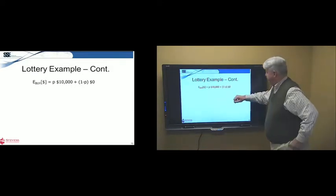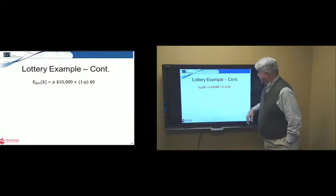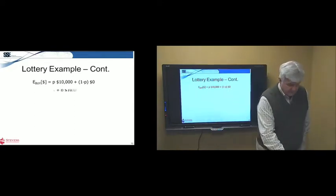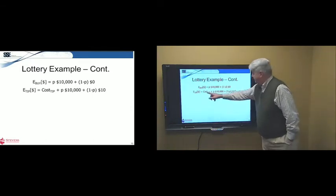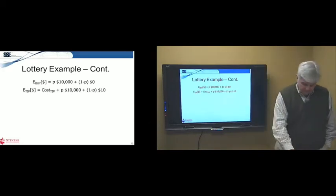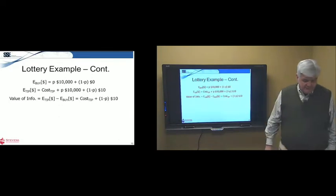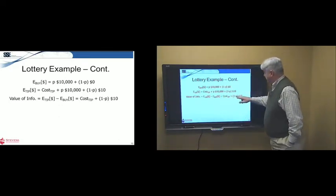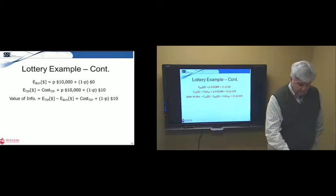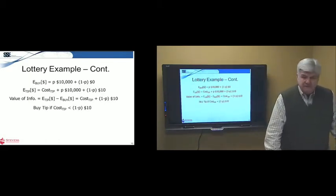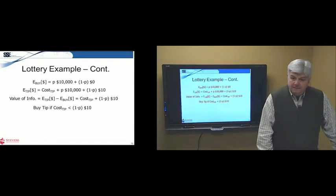So, if we buy a lottery ticket, again, the 10,000 crept in here again. We've got our probabilities, expected value. If we buy the tip, we have the cost of the tip plus the same. So we're actually having to pay for the tip here. But don't forget, if we buy the tip and it says the ticket's not going to win, we don't buy the ticket. So, the value of the information is the cost of the tip minus cost of buy is the cost of the tip plus 1 minus p times 10. And we buy the tip if the cost of the tip is less than 1 minus p times 10. We buy the tip if it costs less than the expected value of losing.